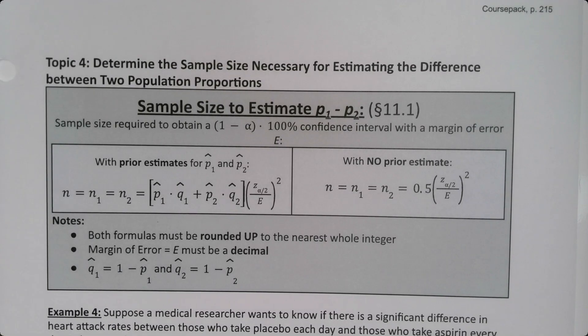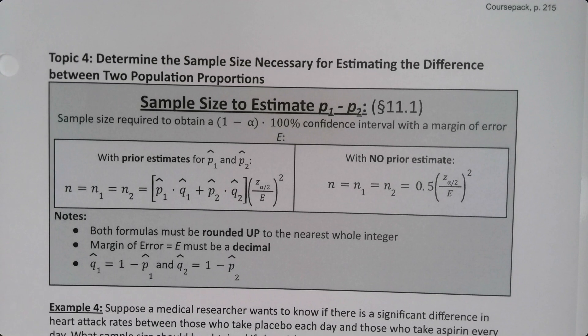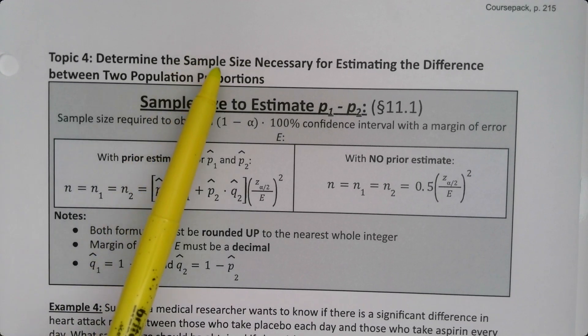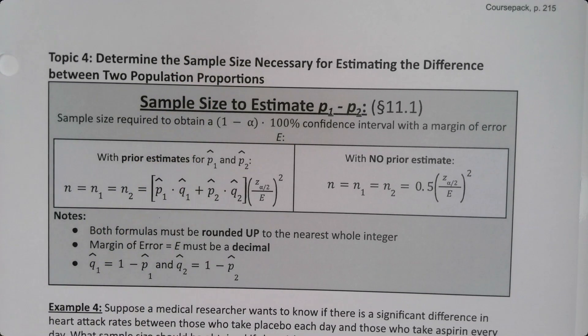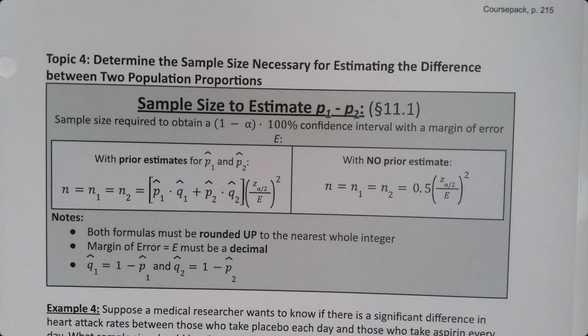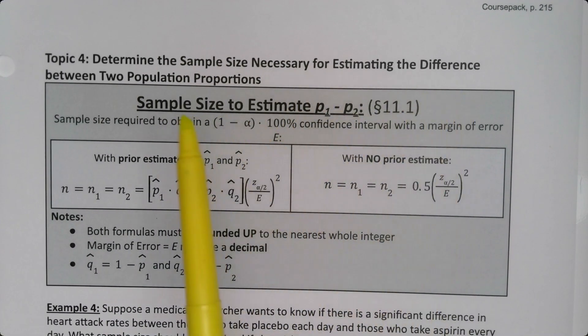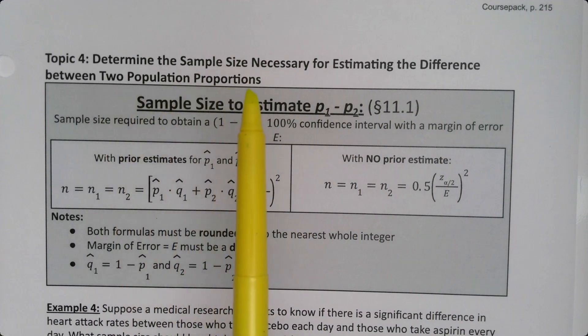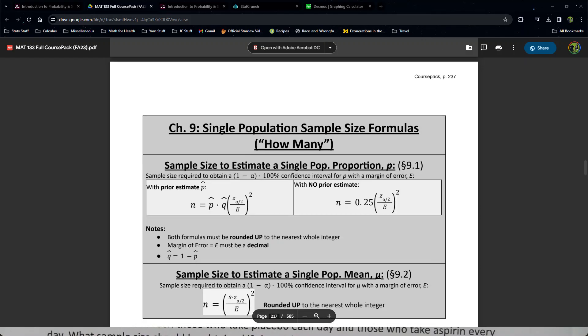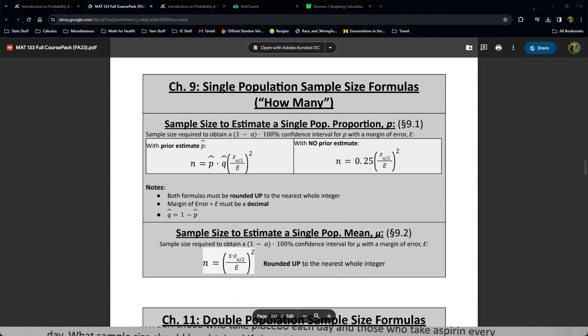It's time for our last topic in section 11.1, which is our old friend sample size. We learned about sample size in chapter 9, and now it's back. But this time it's the sample size necessary for estimating the difference between two population proportions, which we didn't see before. When we looked at it previously, it was only for a single population. Let me pull up that page from the exam notes packet, and you can see it's talking about a single population value here.